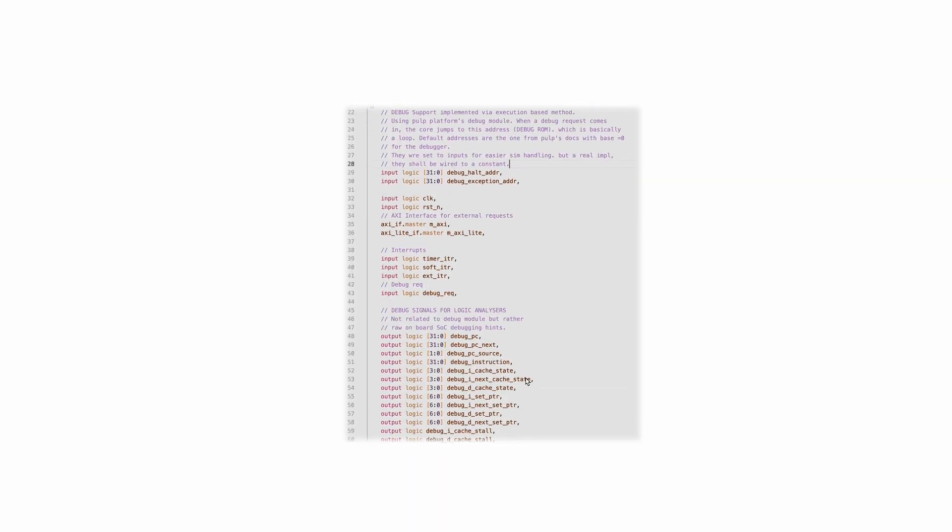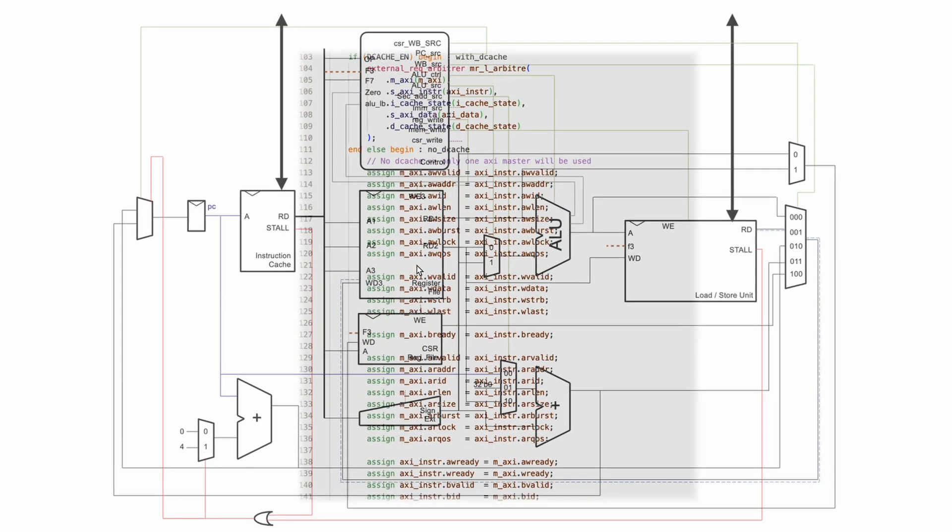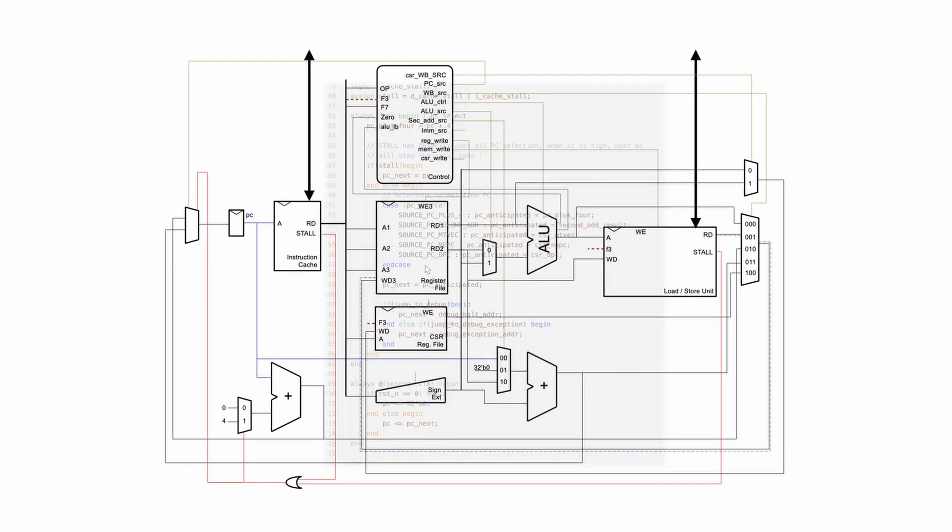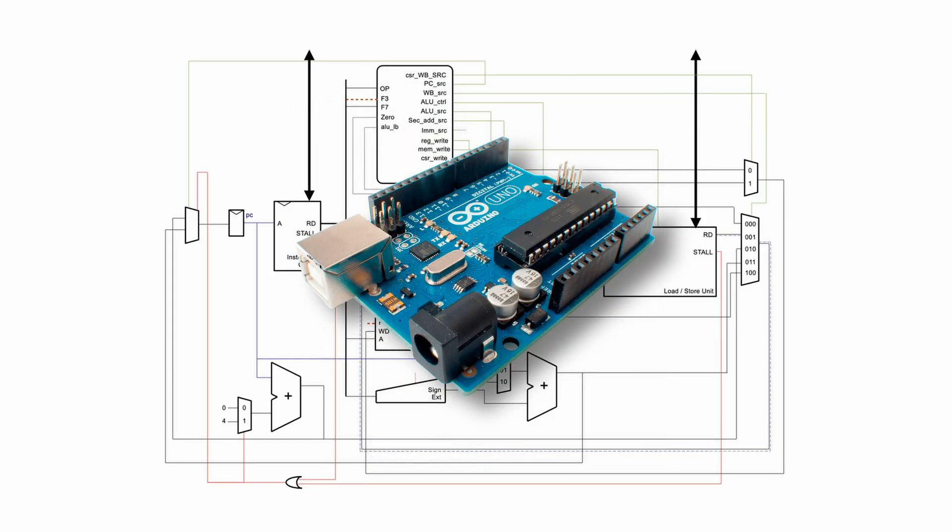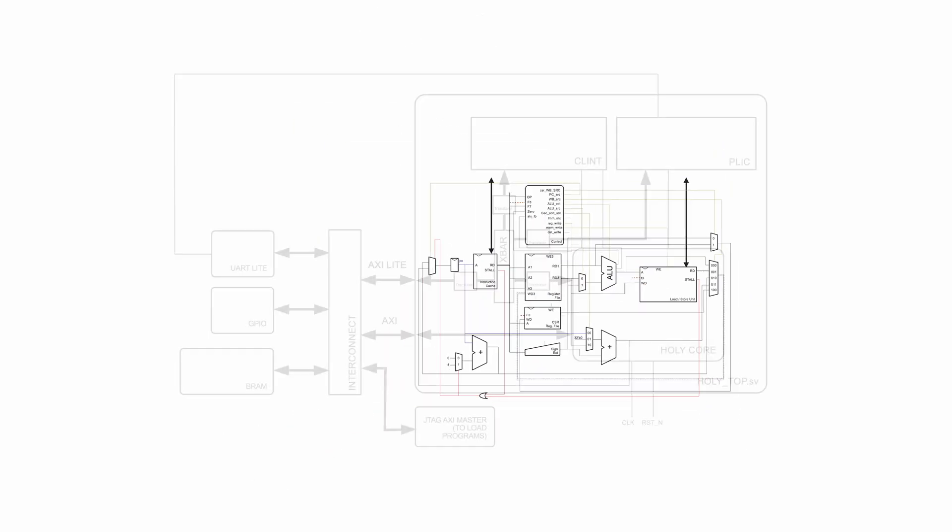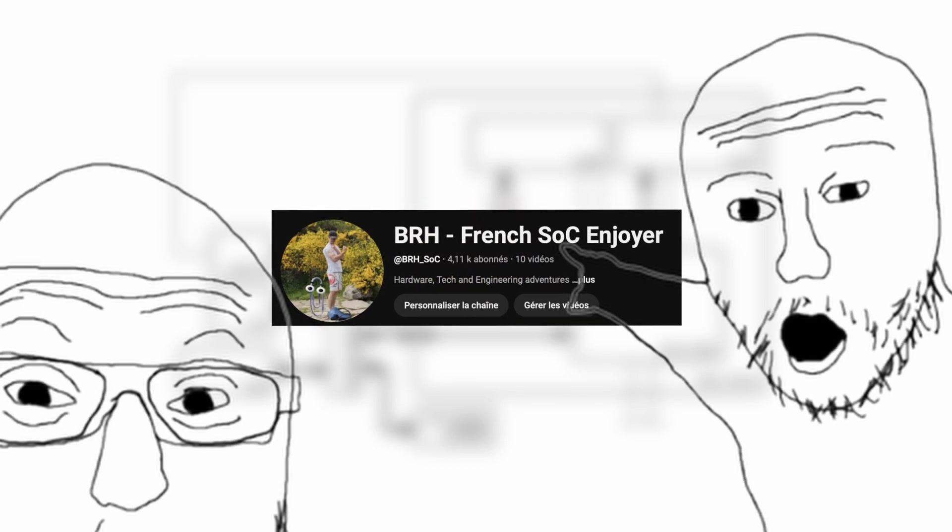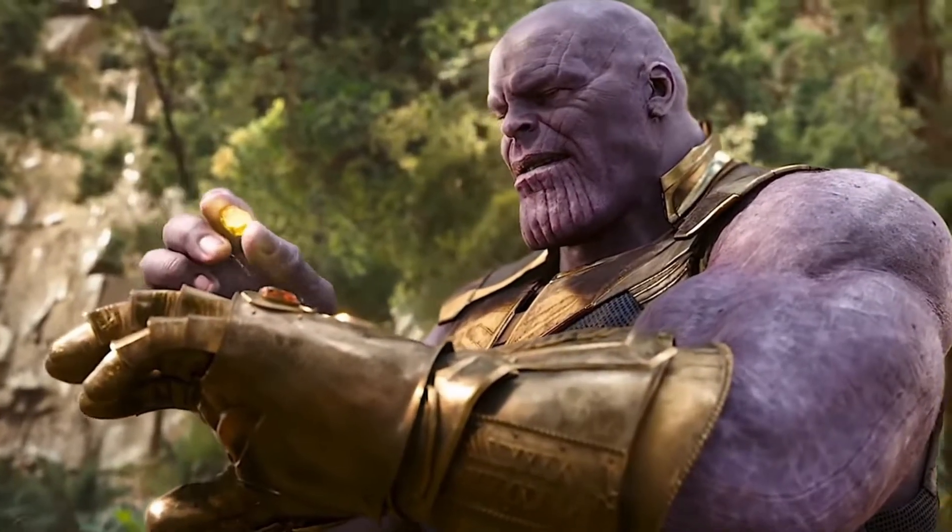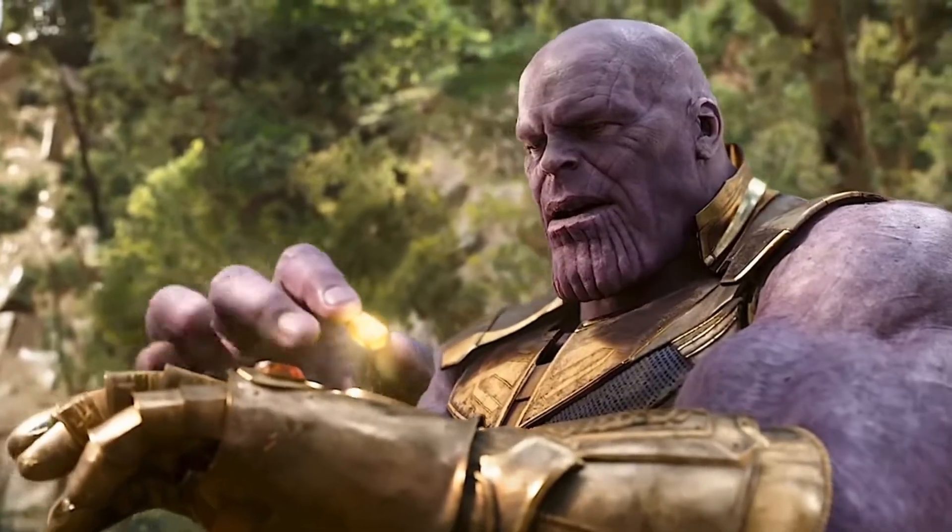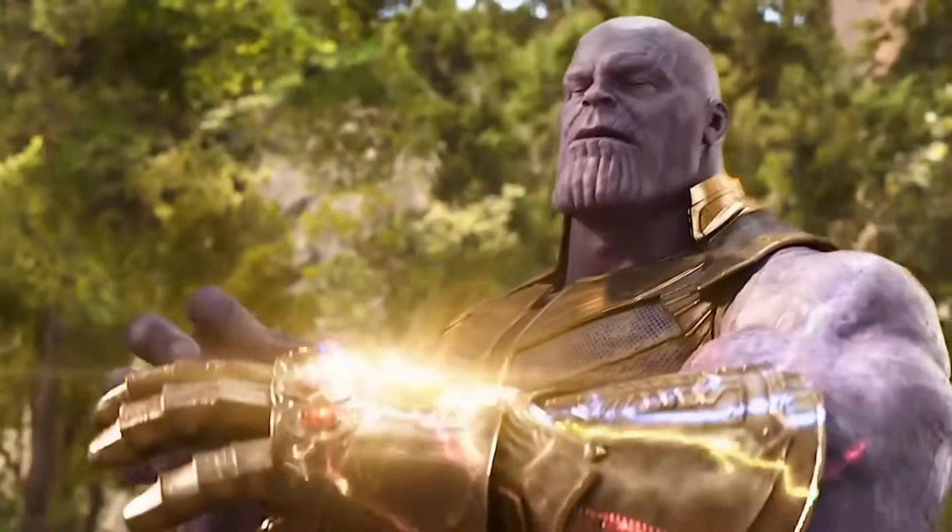So how do you go from this pile of code that describes hardware logic to something that actually feels more like a real Arduino? You have to build a system on a chip, an SOC. You know, that's the name of the channel. The core by itself is dumb. Like any CPU, it's useless until you wire it up with some memory and some peripherals.